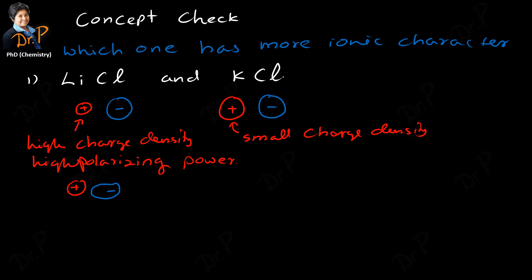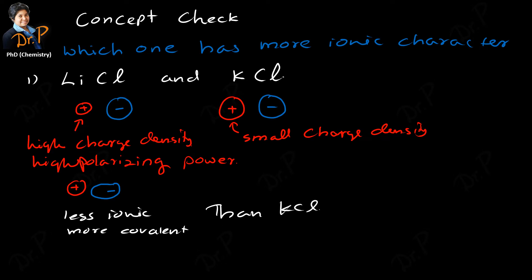In lithium chloride, it looks like there is more sharing, so it has more covalent character — meaning less ionic. It is more covalent than KCl. Remember, I'm not saying that lithium chloride is covalent; we can consider it ionic, but compared to potassium chloride, it has less ionic character and more covalent character. So the answer to which one has more ionic character is KCl.